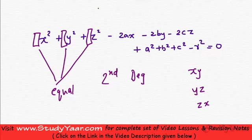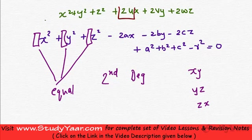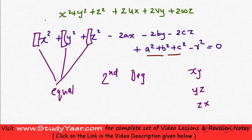So in an equation of a sphere, you basically have x square plus y square plus z square plus a term of x, a term of y and a term of z. Let's just say it is 2ux plus 2vy plus 2wz. So this is a term of x and this is the corresponding coefficient. Similarly, this is a term of y and this is a term of z. And then we have a constant d. A square plus b square plus c square minus r square is a constant. So a general form of an equation of a sphere is like this.